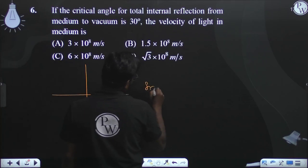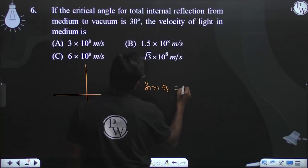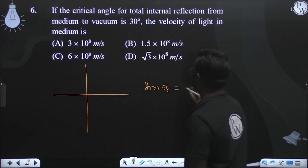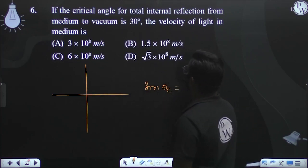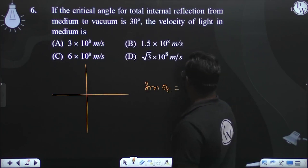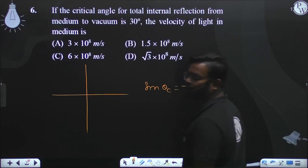Sine theta c — this is 30 degrees. This is medium to vacuum. So, for vacuum it is 1 and this is the medium side.